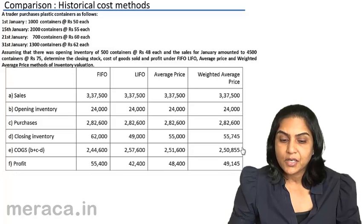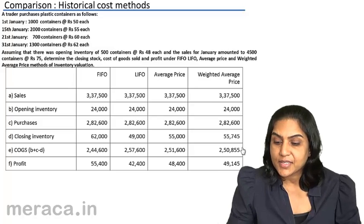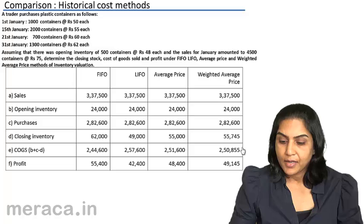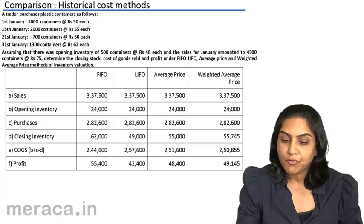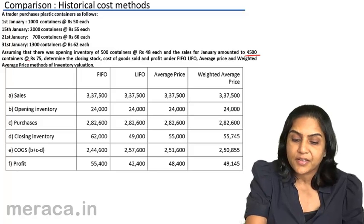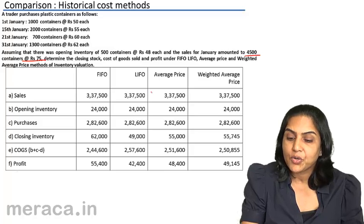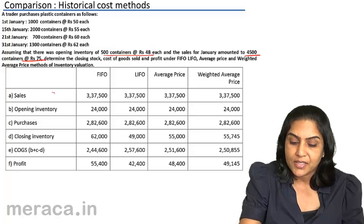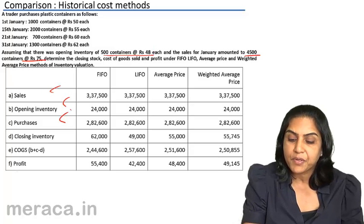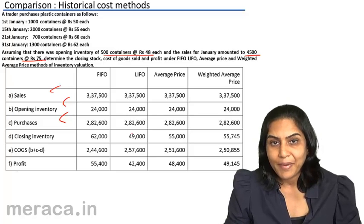Let us make a comparison of the four historical methods that we had discussed so far. In all the cases, sales is of course the same — there is no change. Sales has been given 4500 containers at the rate of Rs.75. Opening inventory value has been given 400 containers at Rs.48. Sales, opening inventory and purchases are the same irrespective of the method.